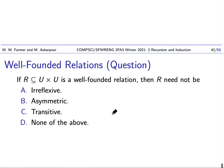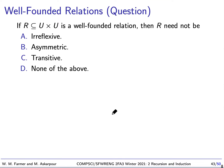Here's a question: if R is a well-founded relation, then R need not be — irreflexive, asymmetric, transitive, or none of the above? I'll give you a moment to think about it.